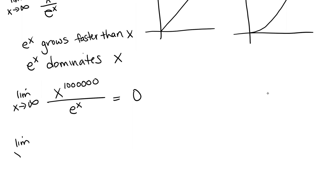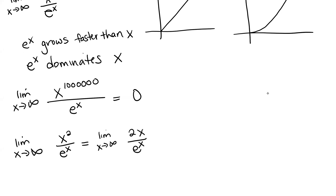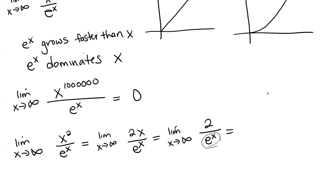Let's look at x squared over e to the x, since we said that e to the x dominates x squared as well. Let's apply L'Hôpital's Rule, because this has the form infinity over infinity. Taking the derivative of the numerator gives us 2x, and the derivative of the denominator is e to the x. Now this is still infinity over infinity, so we can apply L'Hôpital's Rule one more time. Taking the derivative of 2x gives us 2, and the derivative of e to the x is e to the x. Since e to the x is going to grow without bound, 2 divided by e to the x will decrease to 0.